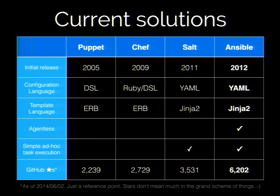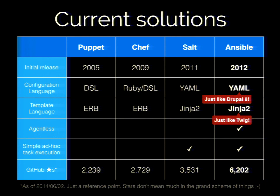Salt came out in 2011 and changed a few things. It doesn't use a programming or domain-specific language for configuration — it uses YAML, a language built for configuration and readability. It uses Jinja 2 for templates, which is built for making templates, not programming. Jinja 2 is essentially the same as Twig — the author of Jinja 2 is the same person who worked on Twig. So if you're learning YAML and Jinja 2 for Ansible, you're also learning YAML and Twig for Drupal 8.